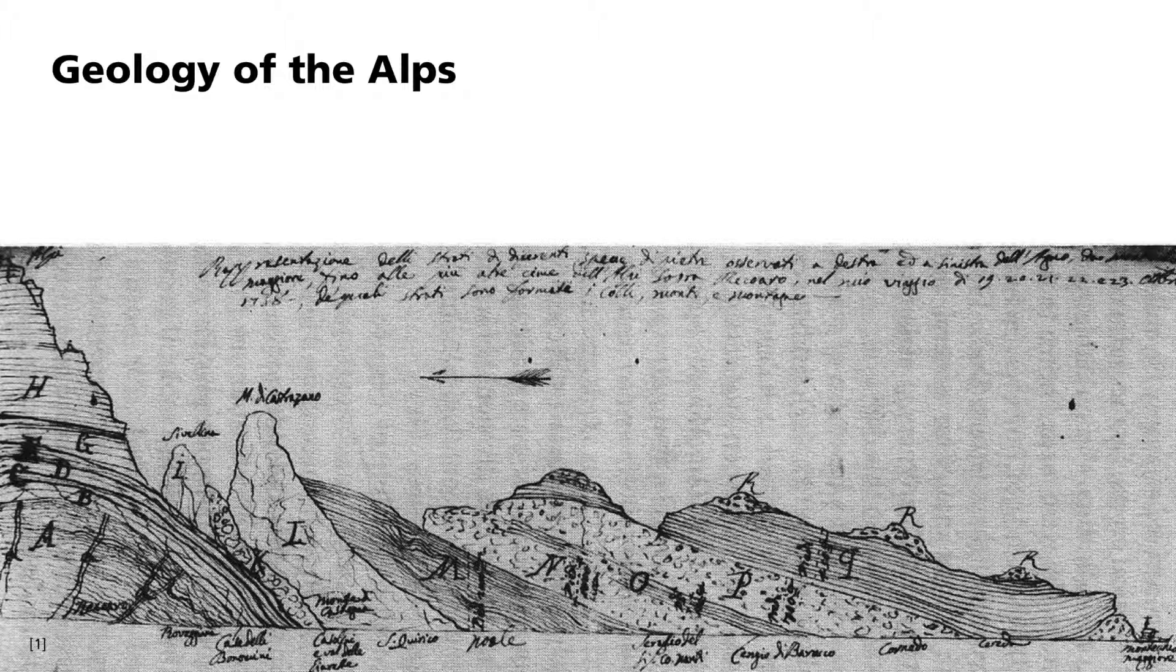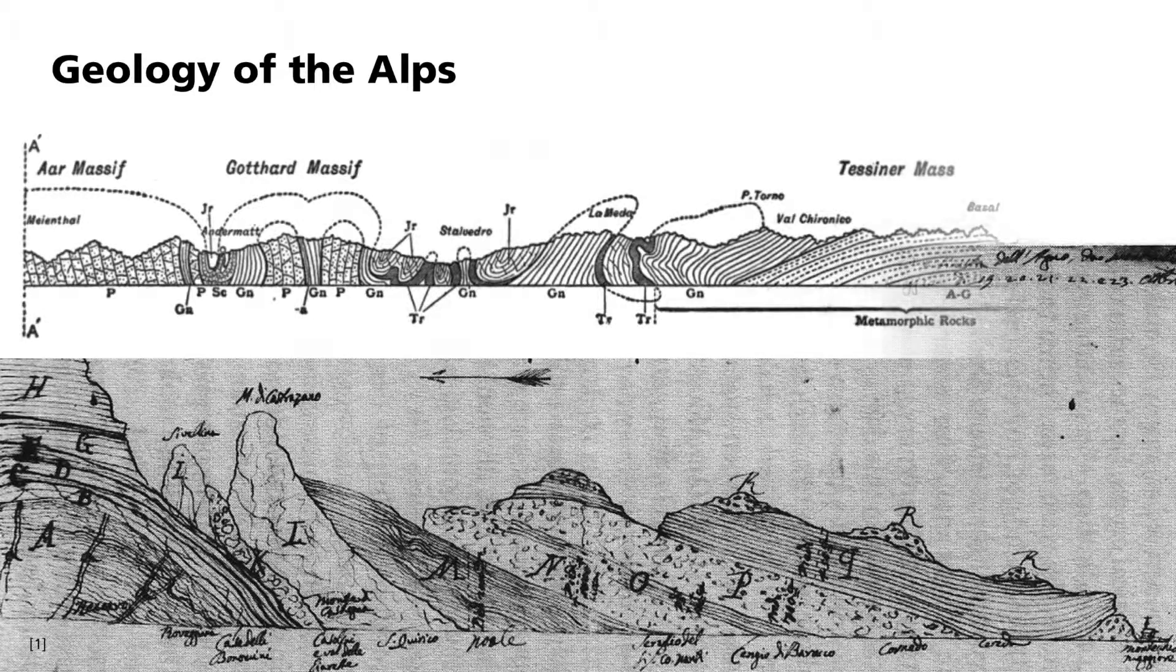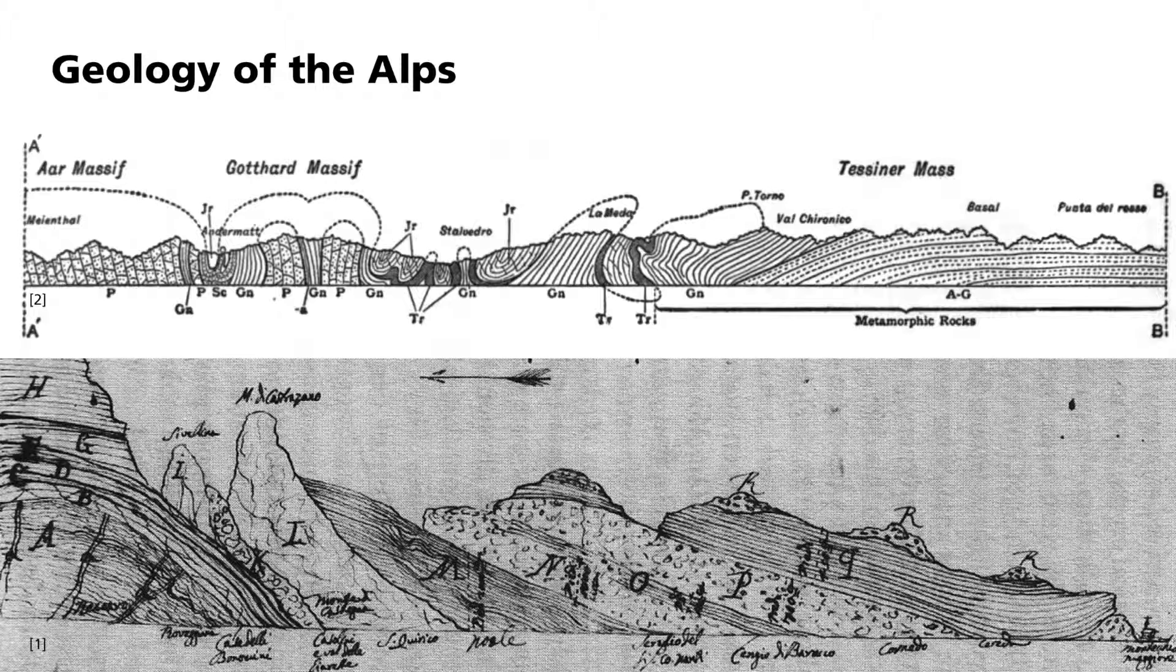The Alps represent a folded mountain range which arose from the collision of the tectonic plates of Africa and Eurasia. These folds can be seen in this longitudinal cross-sectional view through Switzerland from 1911. Here, you can see how individual layers were almost vertically displaced.